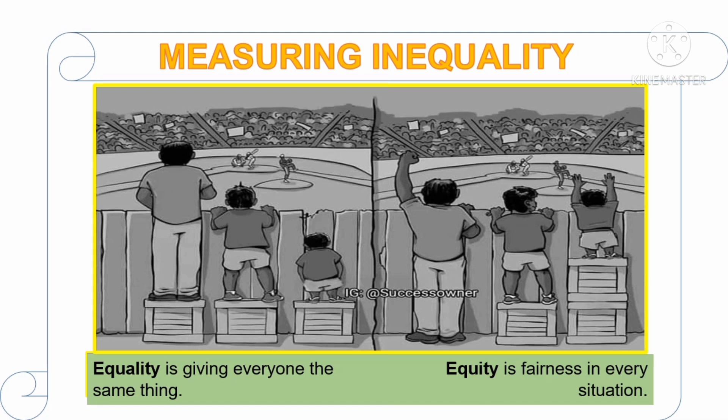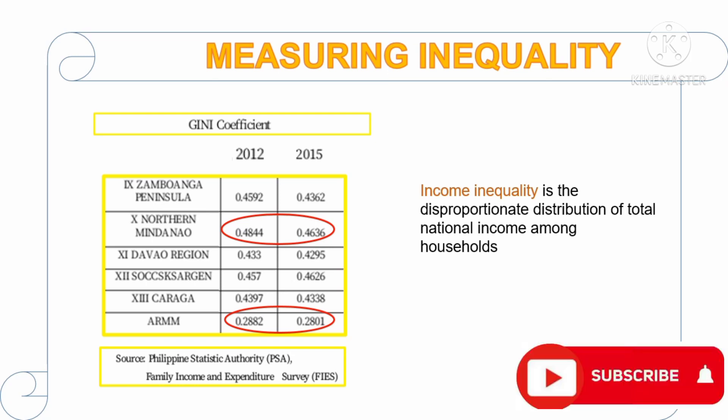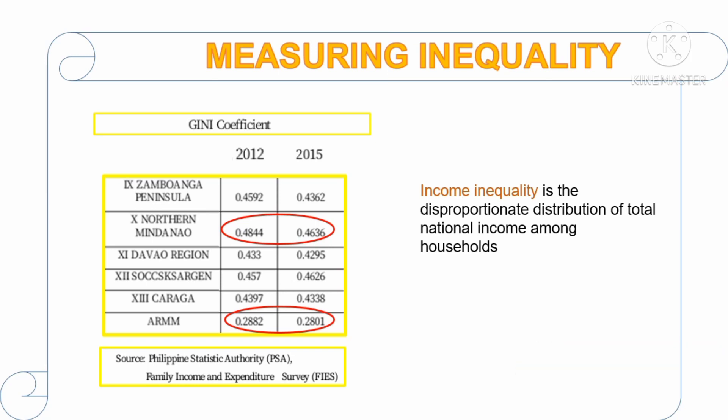More incentives or more chairs are given to those disadvantaged individuals so they can catch up and enjoy the same show as the taller ones. Equity is achieved if no one is left behind or deprived of something. But in reality, inequality is difficult to eliminate — even the richest countries have experienced inequality. There is evidence that the more developed a country is, the more unequal its income distribution tends to be.